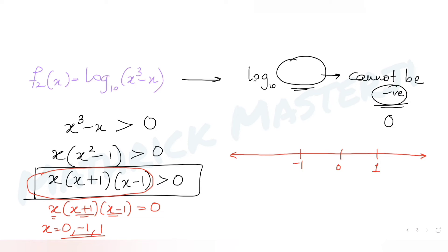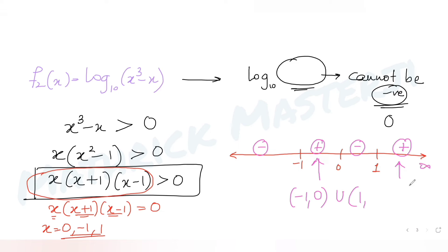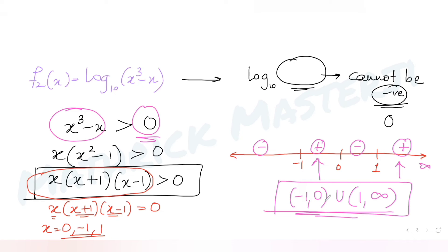Testing x = 2 (greater than 1): (2)(3)(1) — positive, positive, positive — so the product is positive for x > 1. Alternating signs give us that x(x+1)(x-1) > 0 for x in (-1, 0) or (1, ∞). So the domain of f2(x) is (-1, 0) ∪ (1, ∞).